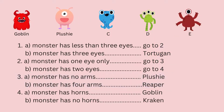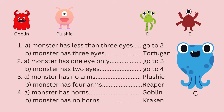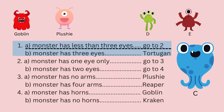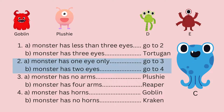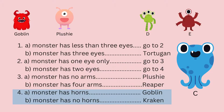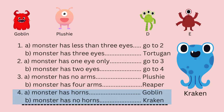Let's identify Monster C. Step one: does the monster have three eyes or less? Monster C has less than three eyes, so we move on to step two. Does the monster have one or two eyes? It has two eyes, so we proceed to step four. Does the monster have horns or not? Since this monster has no horns, we can identify it as Kraken.